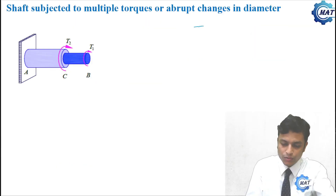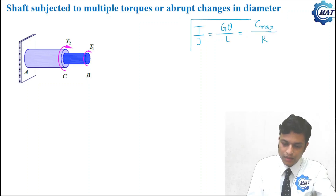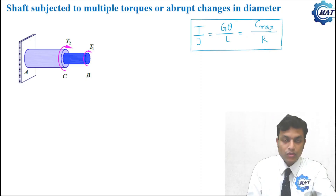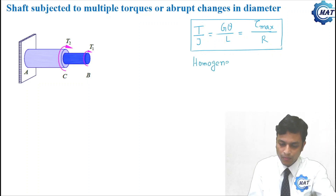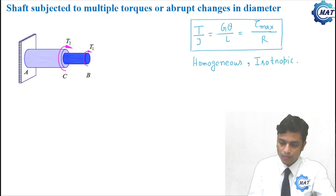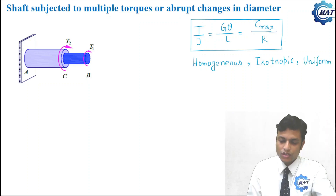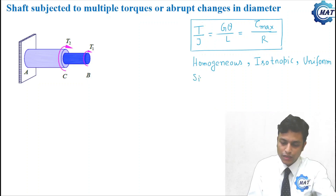The derived elastic equation of torsion is T/J = Gθ/L = τ_max/R. This equation is limited to homogeneous and isotropic shaft material, uniform cross section, and a shaft subjected to a single torque.